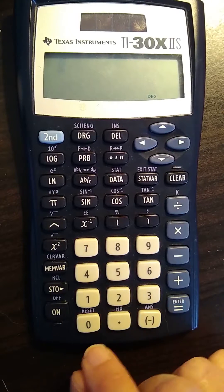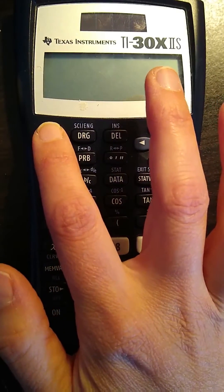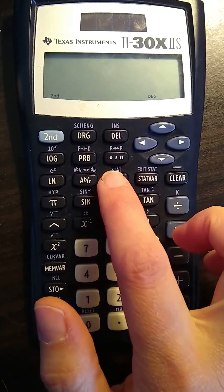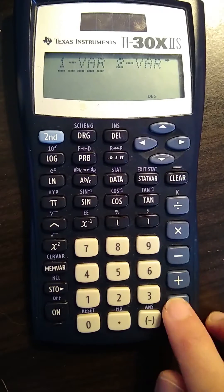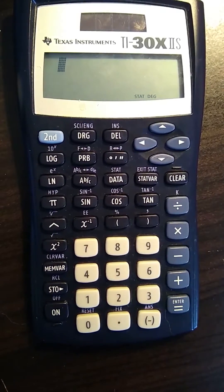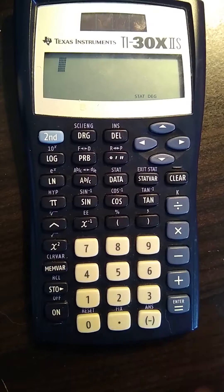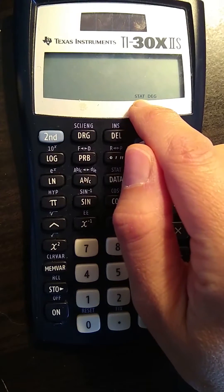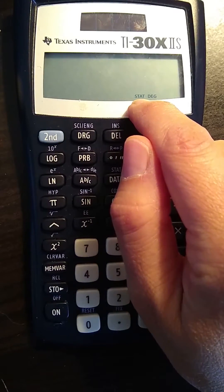So first things first, we have to get it into stat mode. So we press second and then theta or stat, and we want to do one variable statistics. We push enter and it looks like we've done nothing, but we've actually entered - you're in the stat mode so you can see that there.